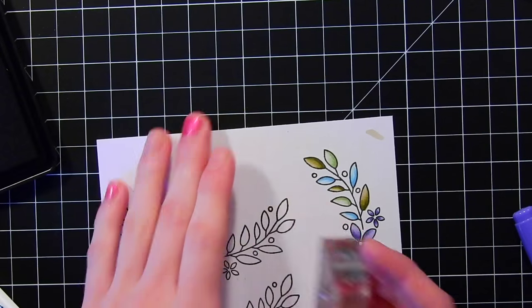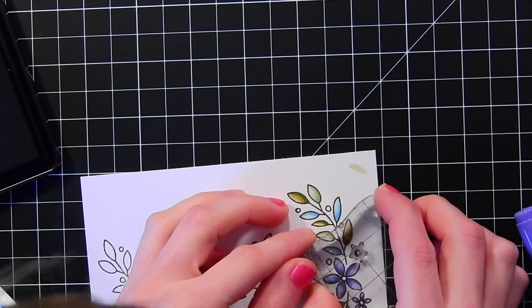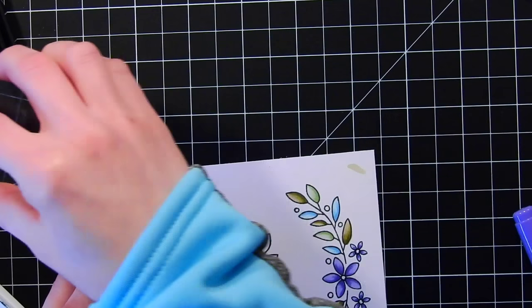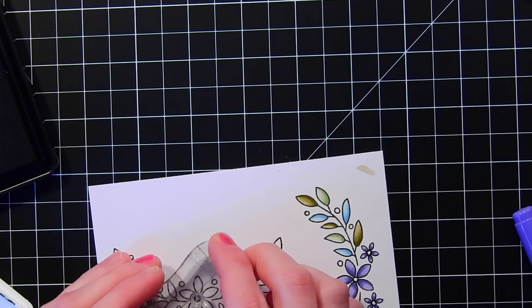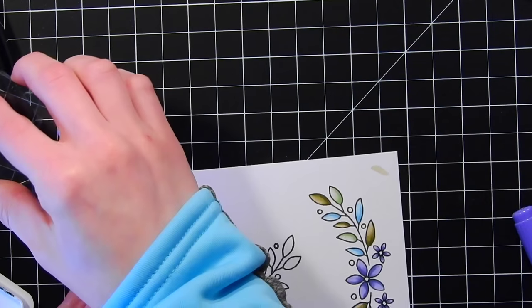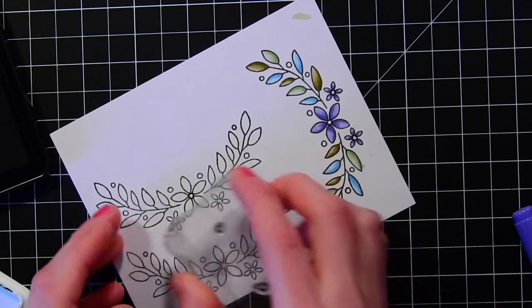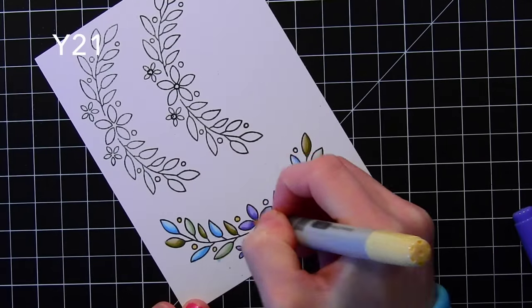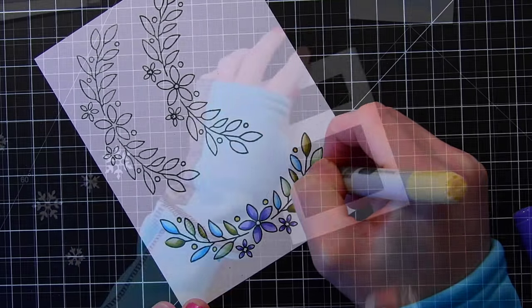So here I'm stamping the centers of all of these little flowers, just using that same black licorice ink. Going to be coloring back over all of the little dots.